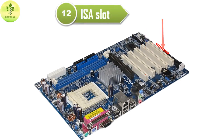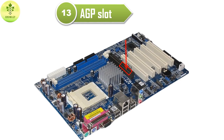Now this one is the ISA slot. Industry Standard Architecture defines a standard architecture for expansion buses. The ISA slot serves as a connection point for input devices and modems. And this one is the AGP slot — Accelerated Graphics Port. It is a type of computer slot used to attach video cards to the system, and this slot facilitates high-speed data transfer.